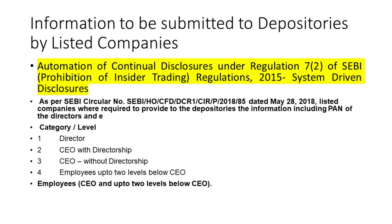The category levels include: Category 1 - Director; CEO with Directorship; CEO without Directorship; Employees up to two levels below CEO. Information about Employees, CEO, and up to two levels below CEO has to be provided.